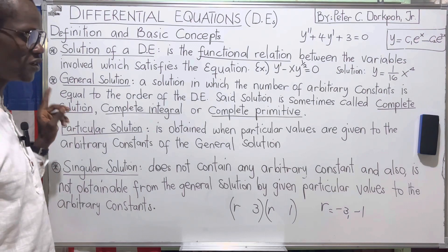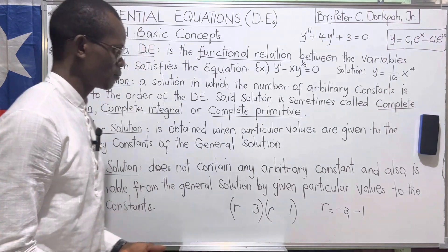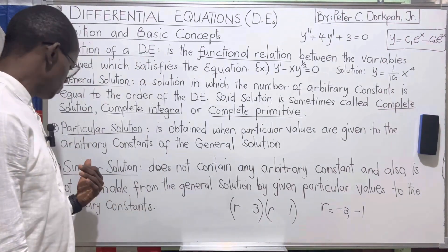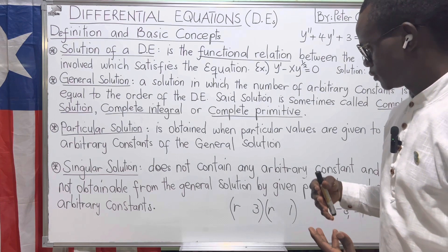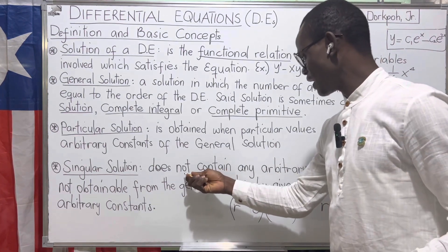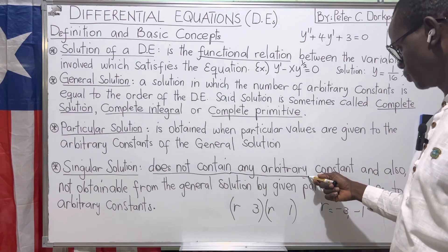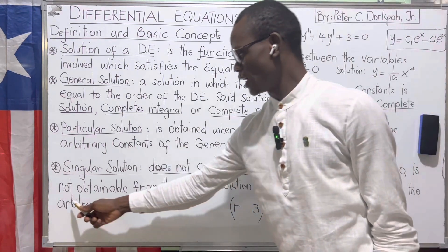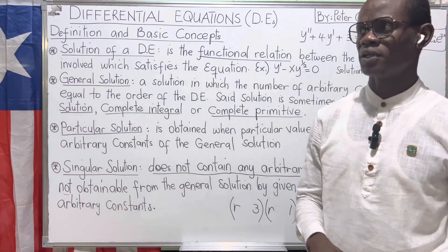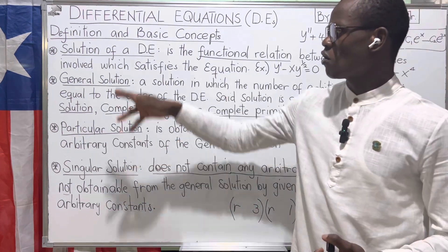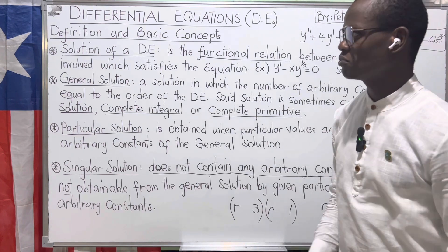Unlike particular solutions, which are obtained from the general solution by replacing arbitrary constants with specific values, a singular solution does not contain any arbitrary constant and is also not obtainable from the general solution. If both conditions are met — no arbitrary constants and not derivable from the general solution — then that solution is referred to as a singular solution.